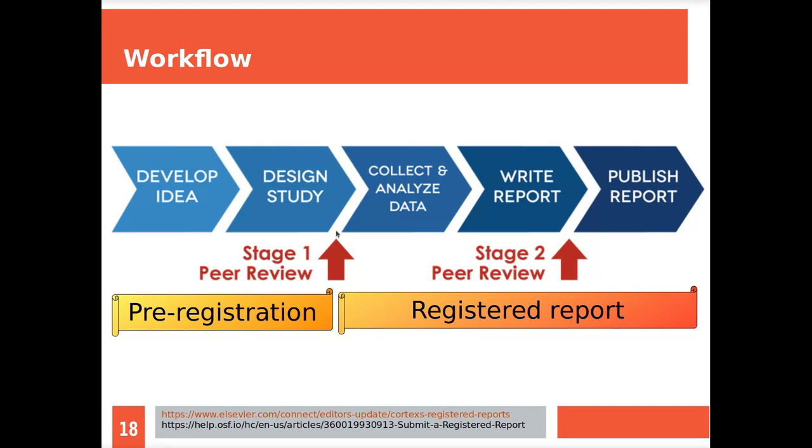You write down your study design without having any results, also your hypothesis. That gets reviewed. The review is about is this a good experiment, is this a good piece of research. If you pass this review, it's the strictest review of the two, then the journal will say you now go do that experiment, and whatever comes out of it, we'll publish the result. If it's significant or not, we'll publish it. Then you collect and analyze your data, write down your report. This gets reviewed, but it's mostly a check if you really stuck to your original design, if you kept your promise, and then it's published.